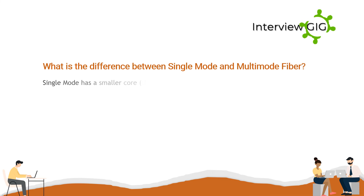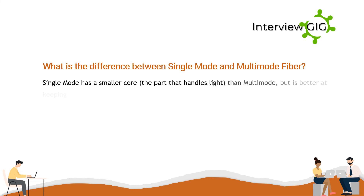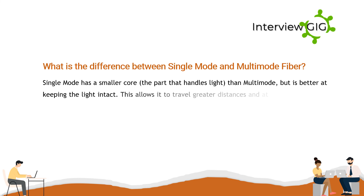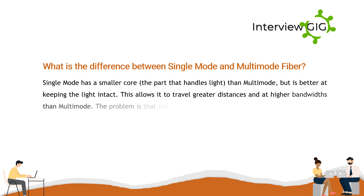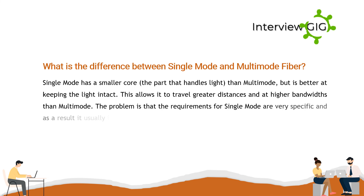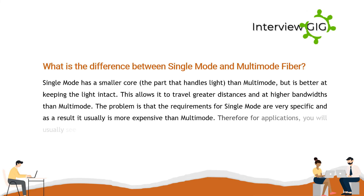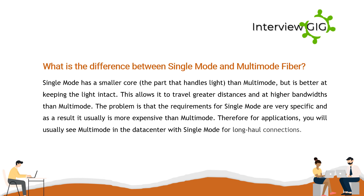What is the difference between single mode and multimode fiber? Single mode has a smaller core — the part that handles light — than multimode, but is better at keeping the light intact. This allows it to travel greater distances and at higher bandwidths than multimode. However, single mode requirements are very specific, making it more expensive. Therefore, multimode is typically used in the data center, with single mode reserved for long-haul connections.